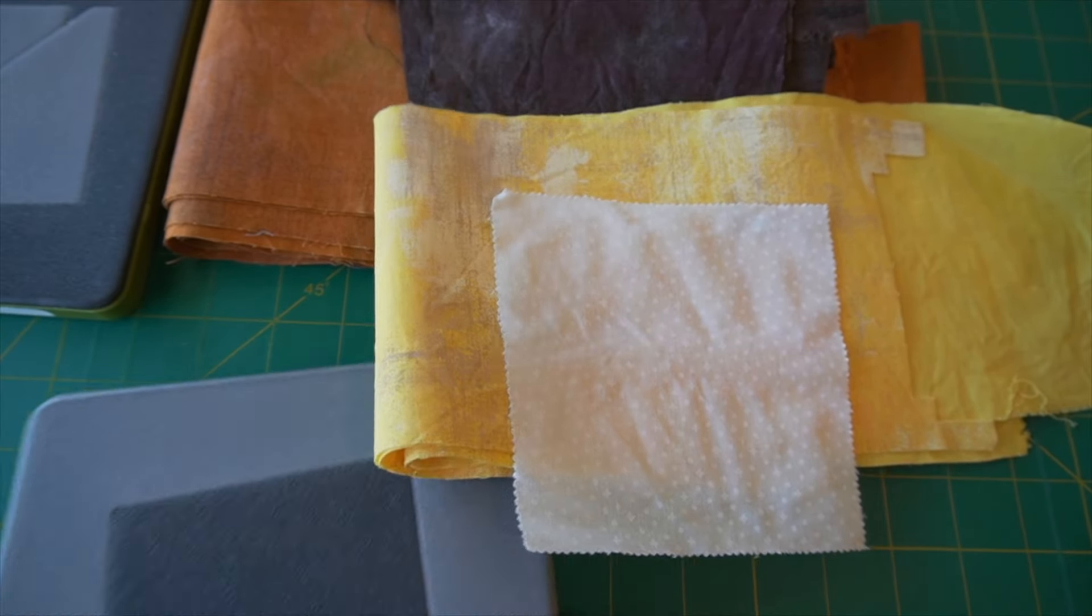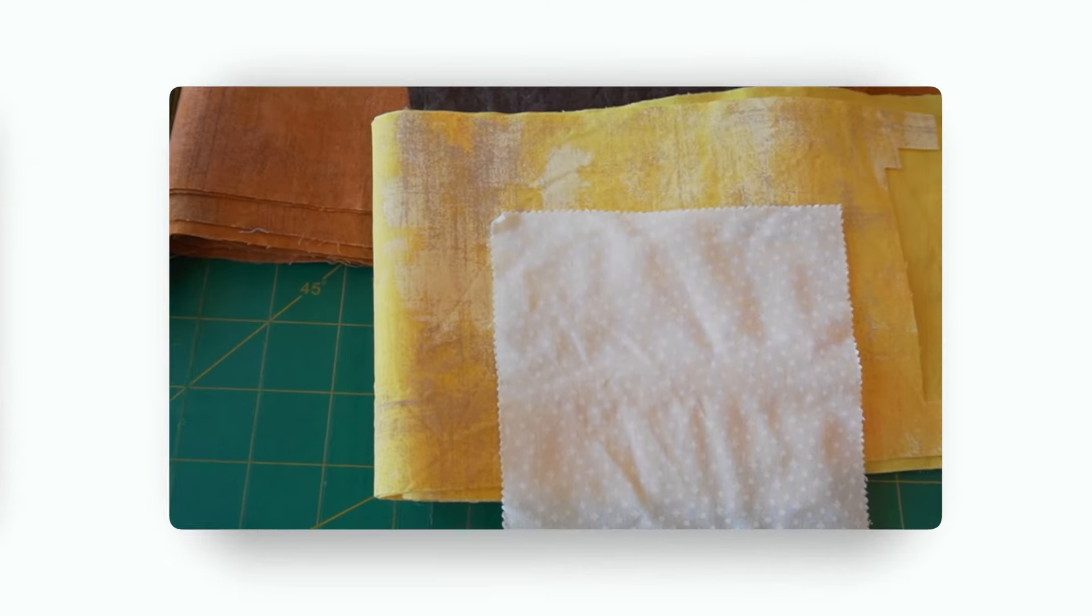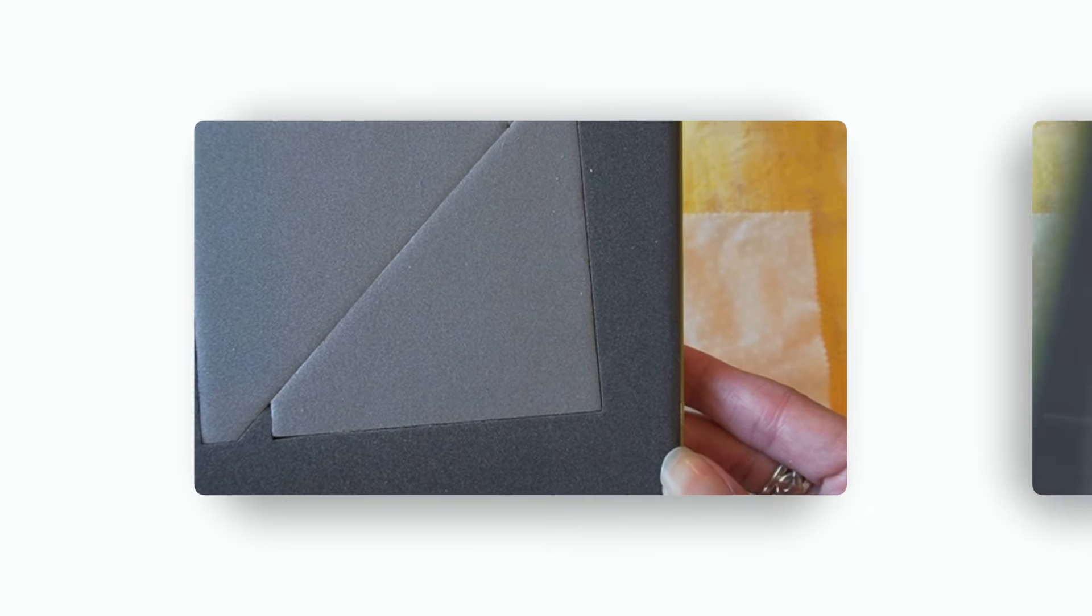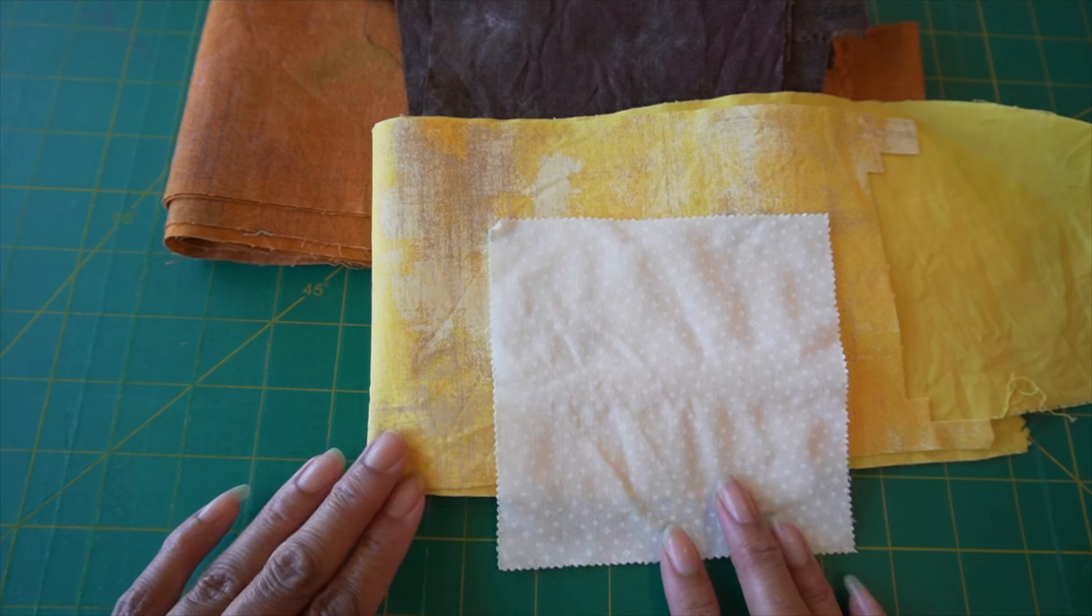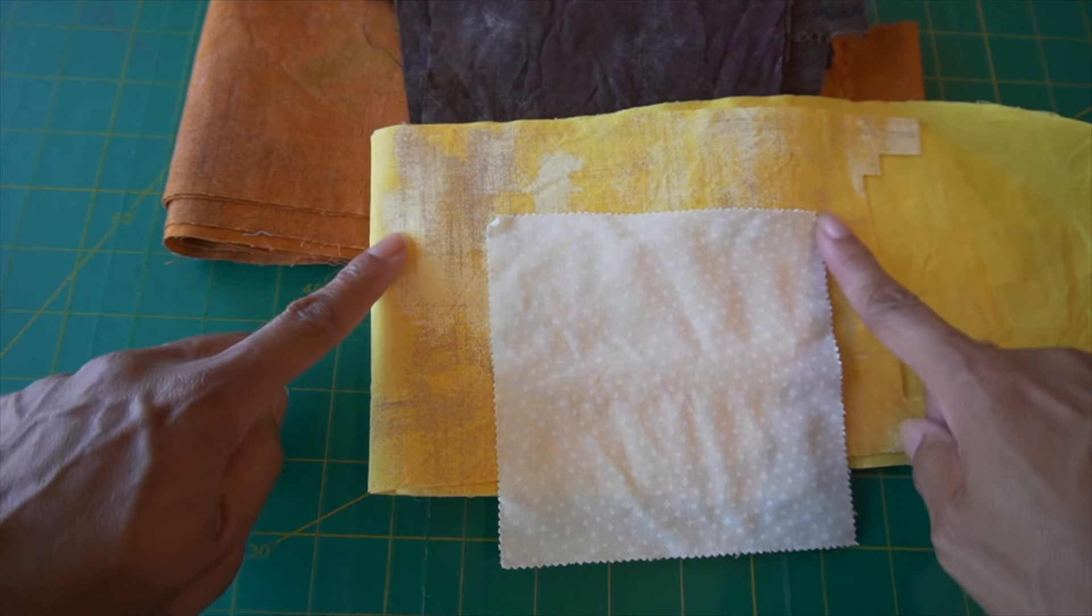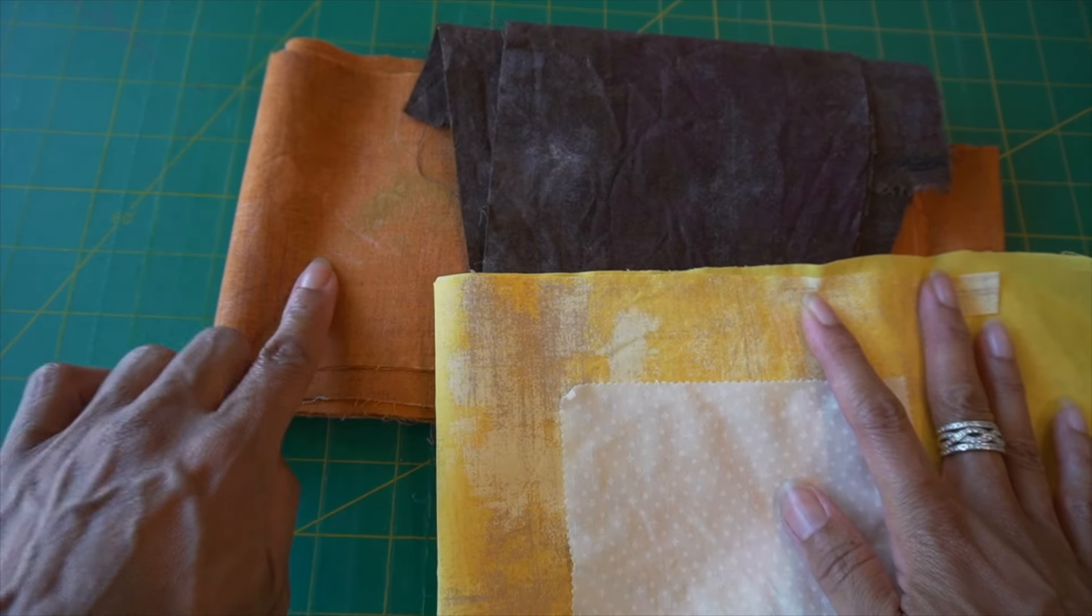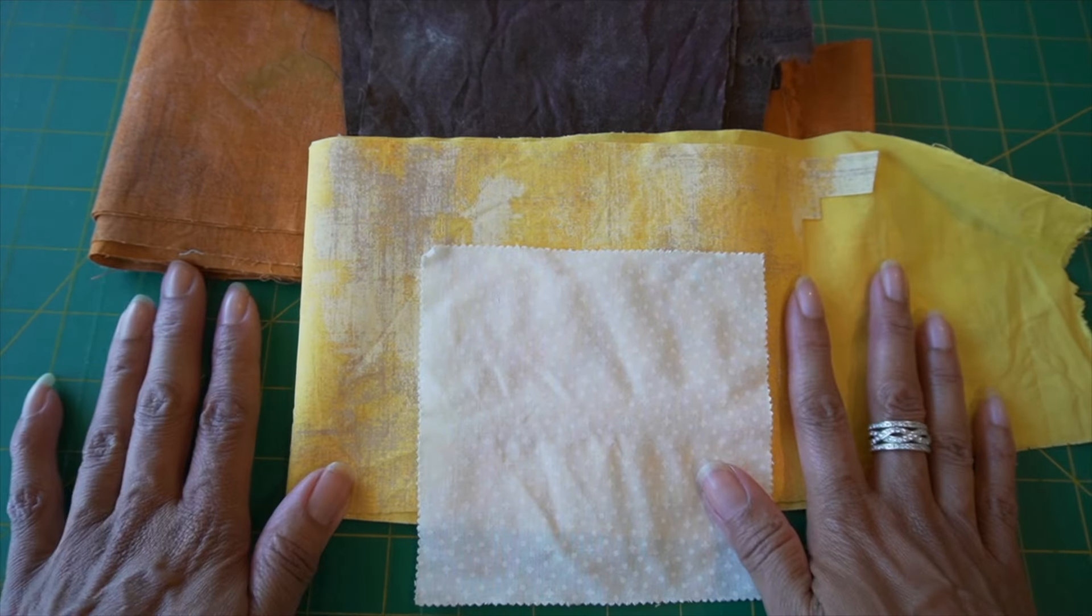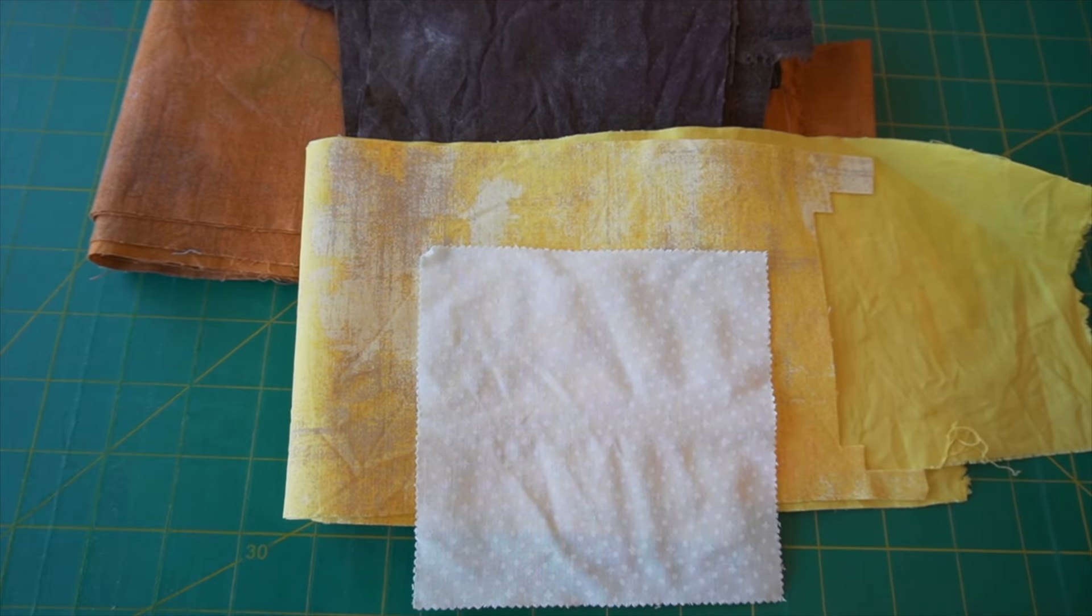So the dies I'll be using are die number one, which is a basic square, and die number three, which is the half-square triangle die. I've pretty much selected the same colors that Maggie Malone used in her block, and that is white for that center square. I've selected my version of a yellow or gold, and I have a burnt orange and a dark brown. I am going to cut out all of the pieces that will be used to make this attic window block, and I will show you what that looks like cut out. Stay tuned!